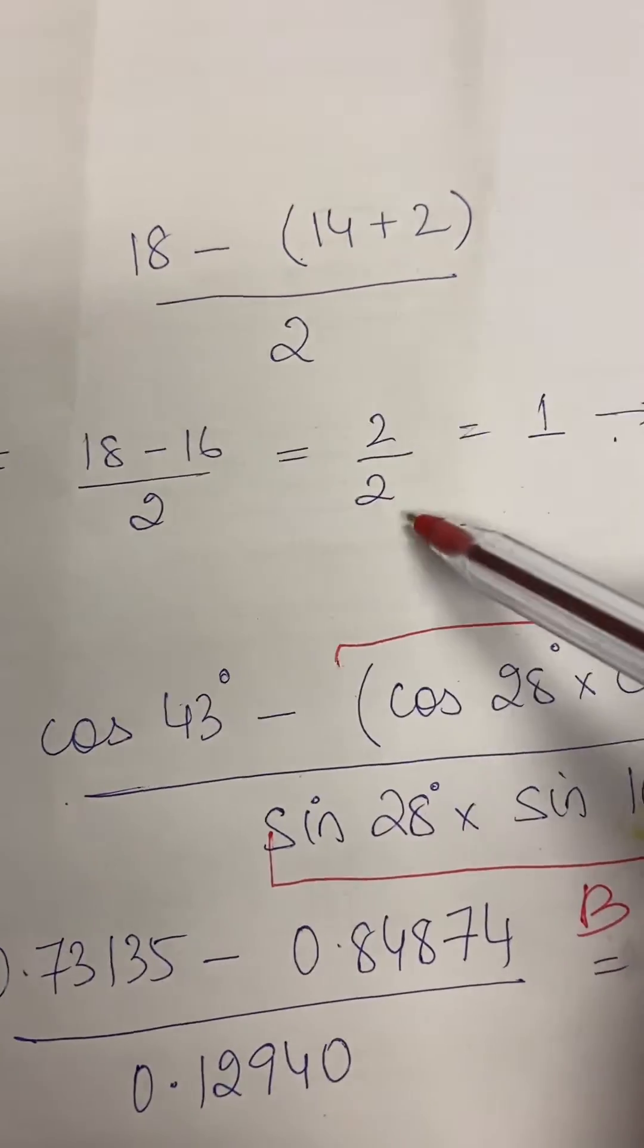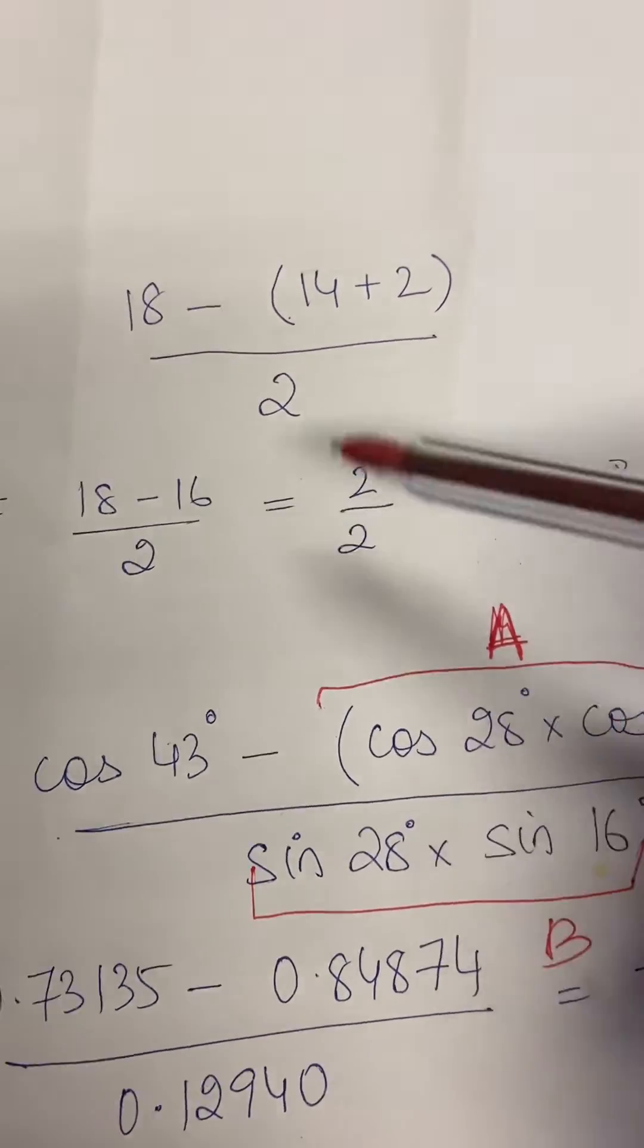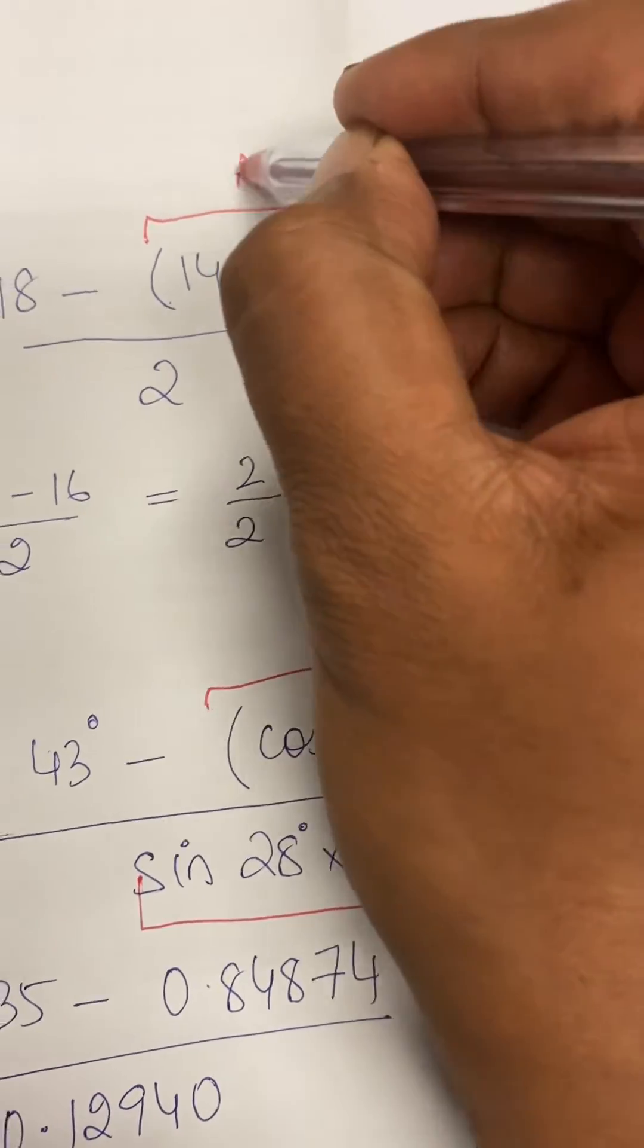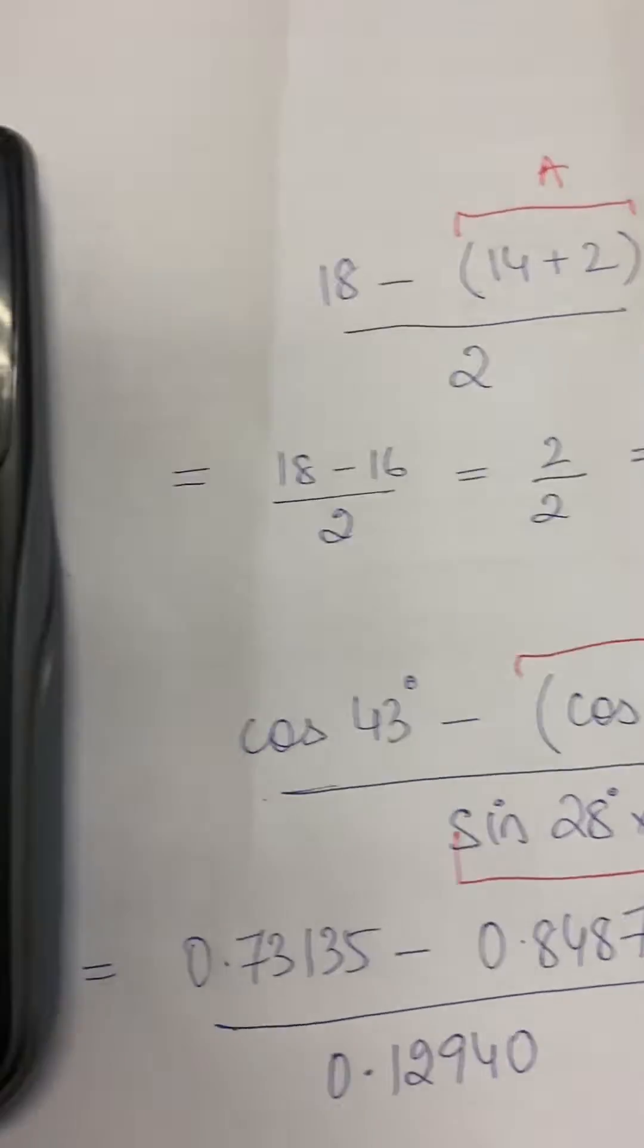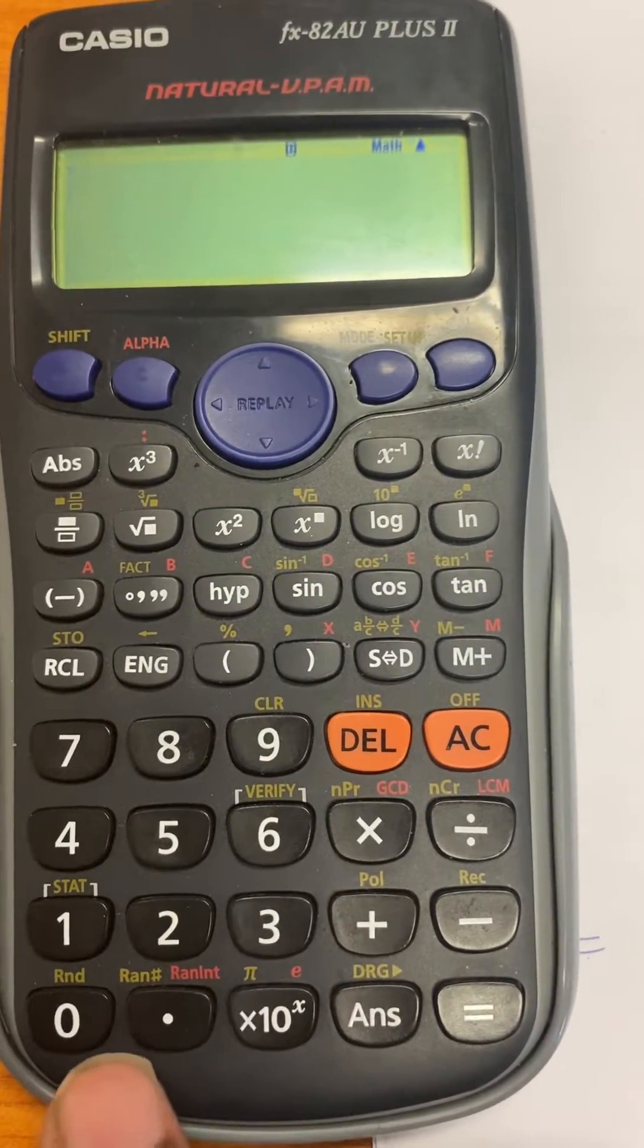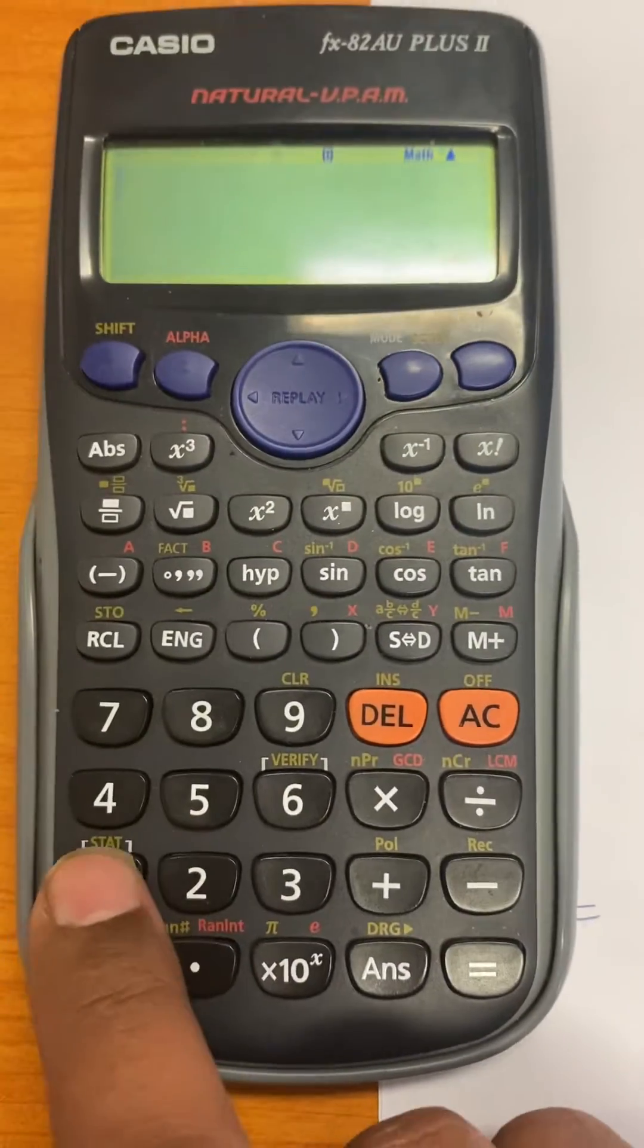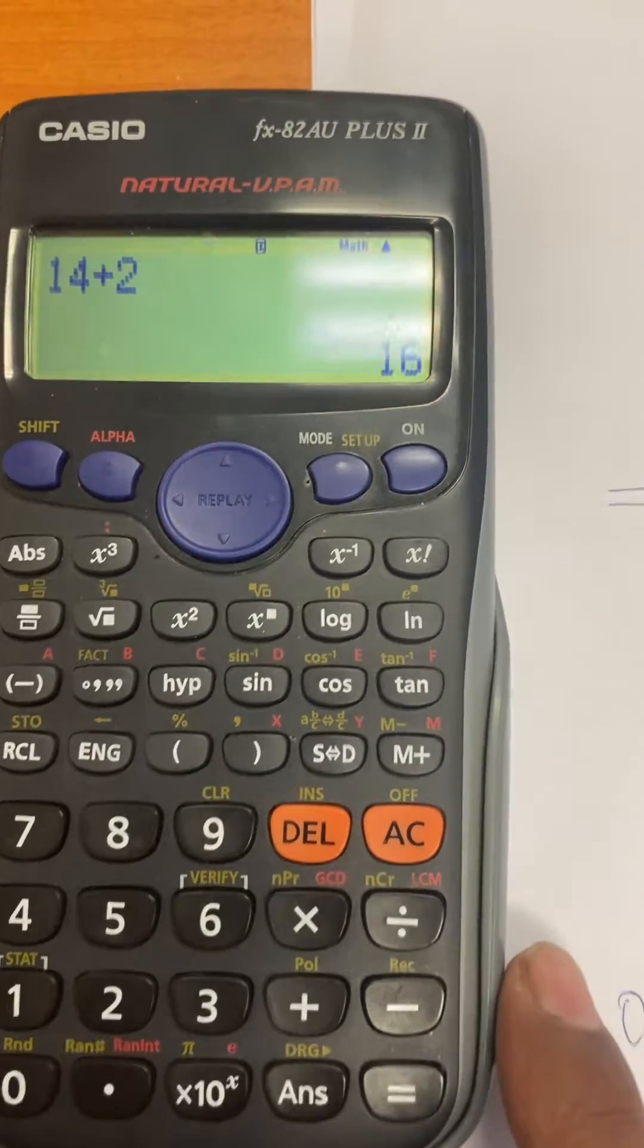So how can I use the recall function for a simple problem like this? What I can do is I'll put the letter A here. I'll tell you why, so when I use the recall function it will help me. So I go back to my calculator here, and what you can do is what you see in the bracket here, 14 plus 2, you can do that first in the calculator. So just do 14 plus 2, this gives you the number 16.